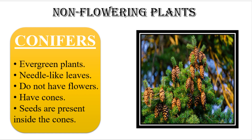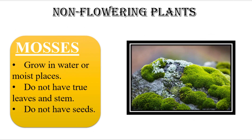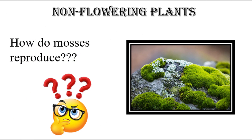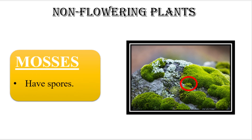The second example of a non-flowering plant is mosses. These plants grow in water or moist places. Mosses do not have roots, leaves, or a stem. Since they are non-flowering plants, they do not have flowers and they do not have seeds. A question that should come to your mind is: if mosses do not have seeds, how do they reproduce? Please think about it and write your answer in the comment section. Mosses reproduce by producing spores.